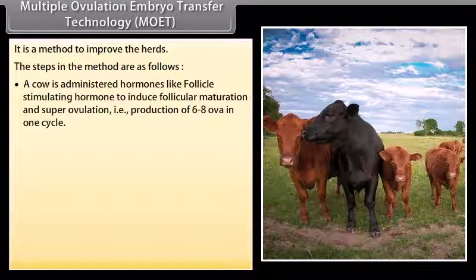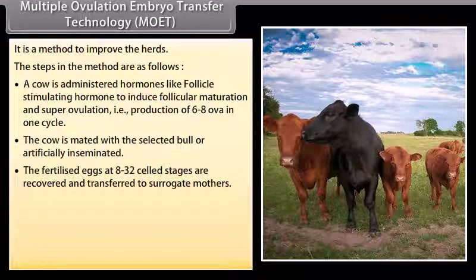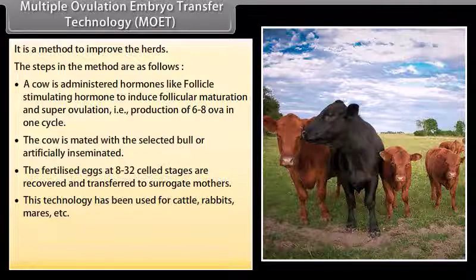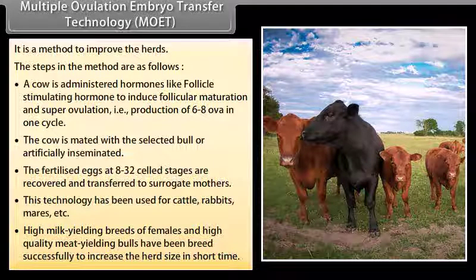Multiple ovulation embryo transfer (MOET) technology is a method to improve herds. A cow is administered hormones like follicle stimulating hormone to induce follicular maturation and super ovulation, producing 6 to 8 ova in one cycle. The cow is mated with a selected bull or artificially inseminated. The fertilized eggs at 8 to 32 celled stages are recovered and transferred to surrogate mothers. This technology has been used for cattle, rabbits, mares, etc., to breed high milk yielding females and high quality meat yielding bulls and increase herd size in the short term.